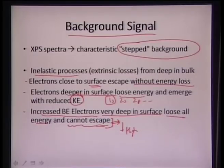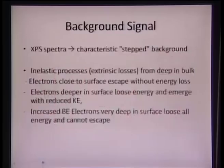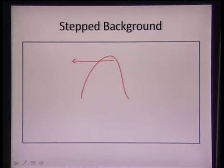The second feature is peak splitting. If the orbital angular momentum and electron spin are aligned favorably — spinning in opposite directions — there is less resistance and this is a favorable state. If they are aligned unfavorably — spinning in the same direction — there is friction and this is energetically unfavorable.